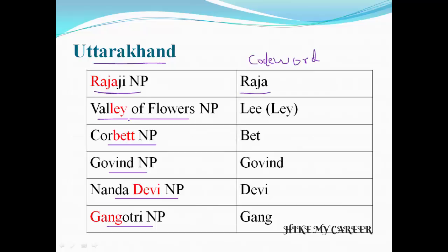Rajaji National Park code word is 'Raja'. Valley of Flowers National Park code word is 'Lee'. Corbett National Park code word is 'Bet' — I created 'Bet' from Corbett. Govind National Park code word is 'Govind'. Nanda Devi National Park code word is 'Devi'. And Gangotri National Park code word is 'Gang'.